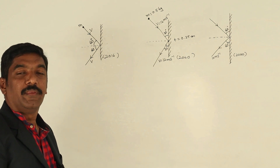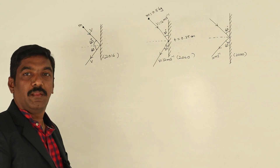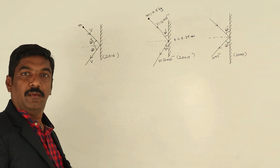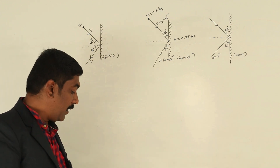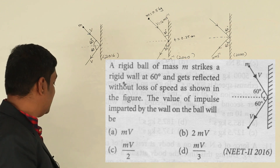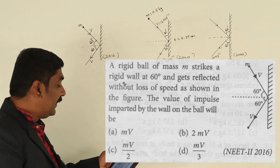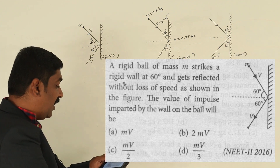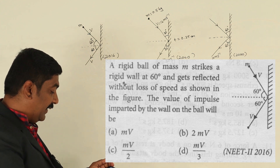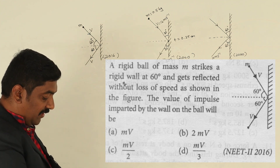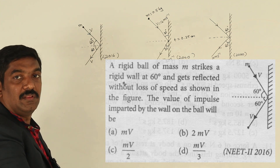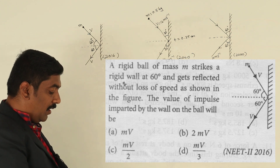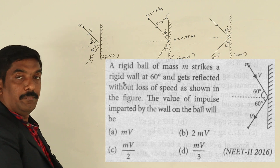Welcome to RSKACAME. In this session, we will talk about change in momentum and vector-based problems from 2016. A rigid ball of mass M strikes a wall at 60 degrees and gets reflected without loss of speed, as shown in the figure. The value of the impulse imparted by the wall on the ball will be?